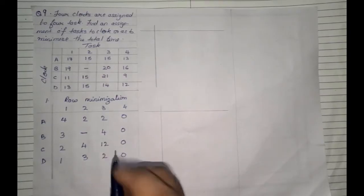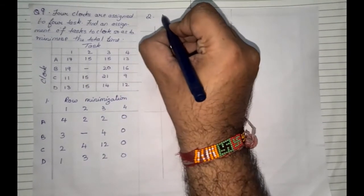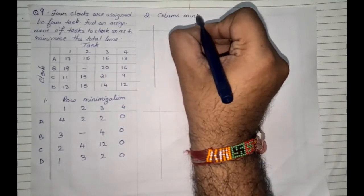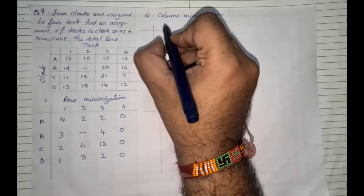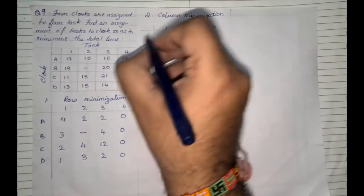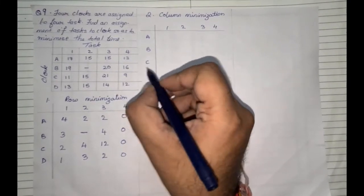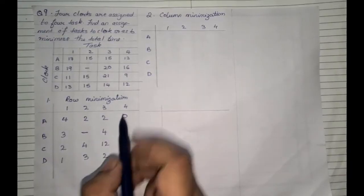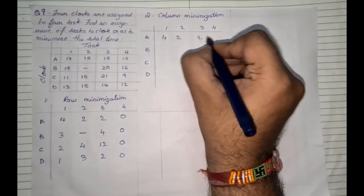Once we are done with row minimization, the next step is column minimization. We create a similar table with rows 1, 2, 3, 4 and columns A, B, C, D. In column minimization we go column wise. In the first column the lowest value is 1, so it will be subtracted from all values: 4 minus 1 is 3.